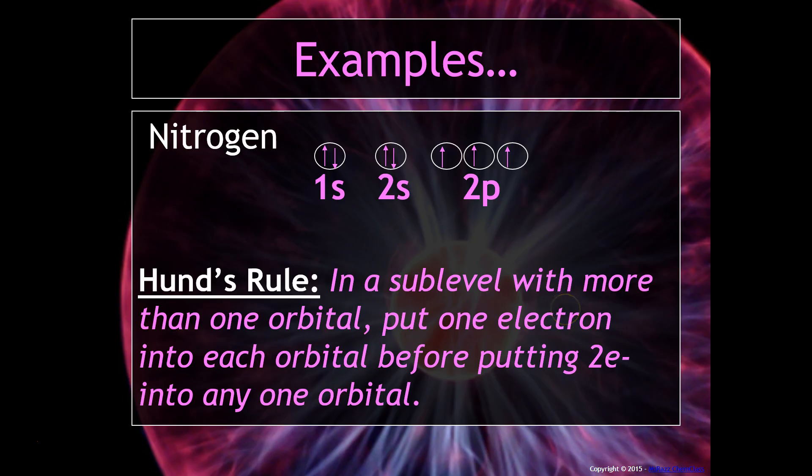Hund's rule says in any sublevel with more than one orbital you have to put one electron into each orbital before putting two electrons into any one. So an analogy to this would be: let's say there's 24 students in the class and I have 24 lollipops. I'm not going to give the first three students two lollipops before I give everyone else one. And so that's the same idea with Hund's rule.